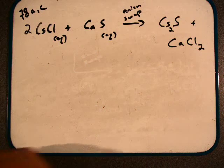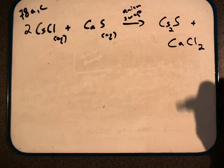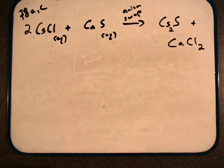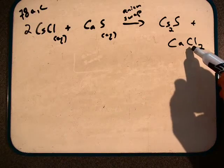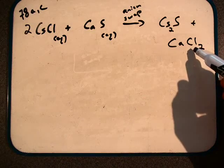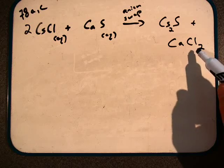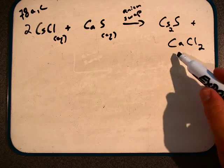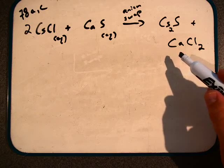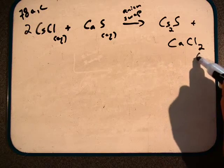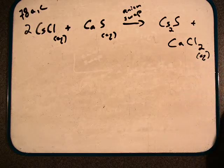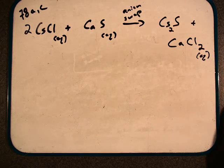Now we ask ourselves, are our products aqueous or precipitates? If we look at calcium chloride first, halides are very soluble unless they're paired with a transition metal. Calcium is a group 2A metal, tends to be very soluble as well. We have aqueous as our predicted solubility for calcium chloride.